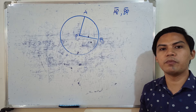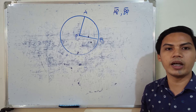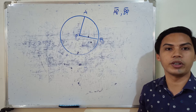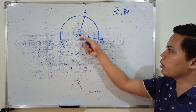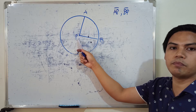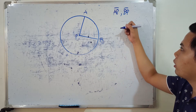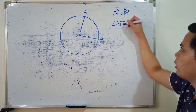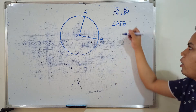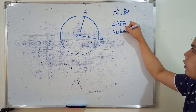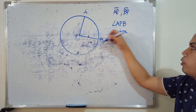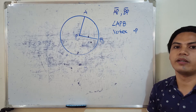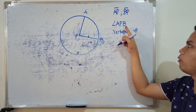We have to remember that the central angle is an angle whose vertex is the center of the circle. So the vertex here is point P, and our central angle is angle APB.